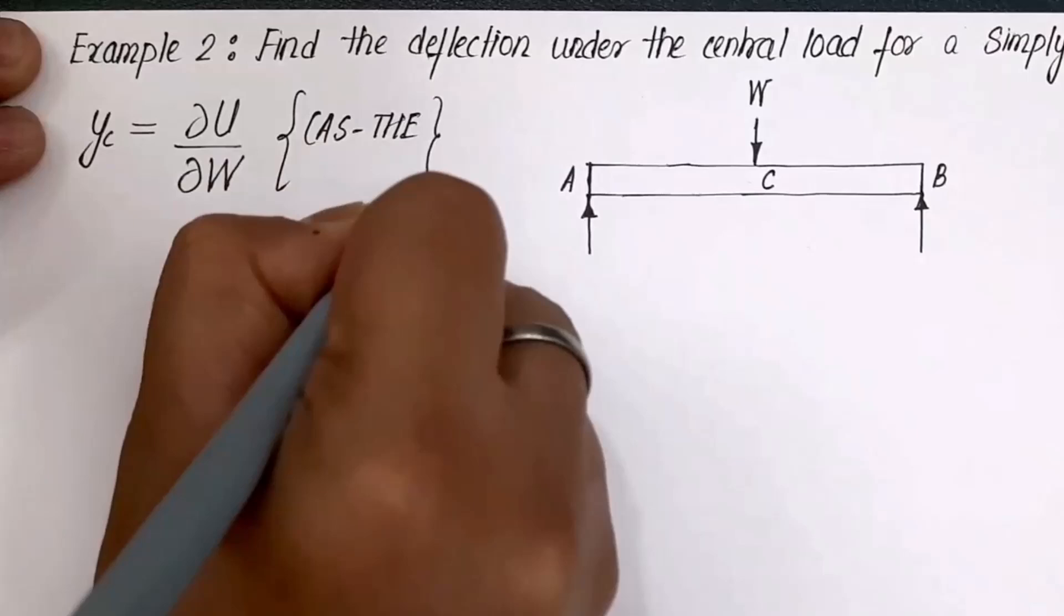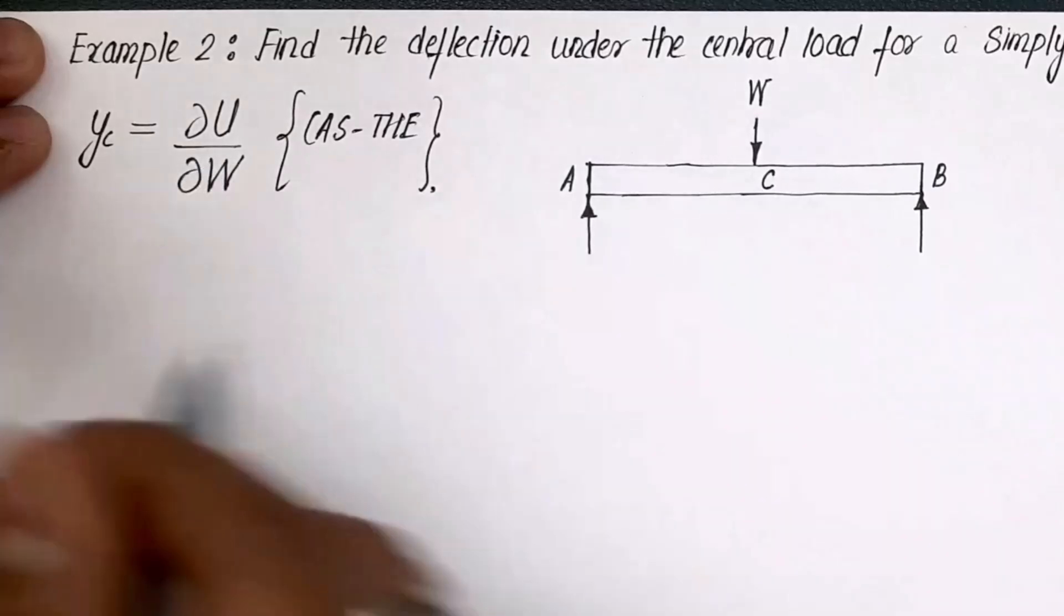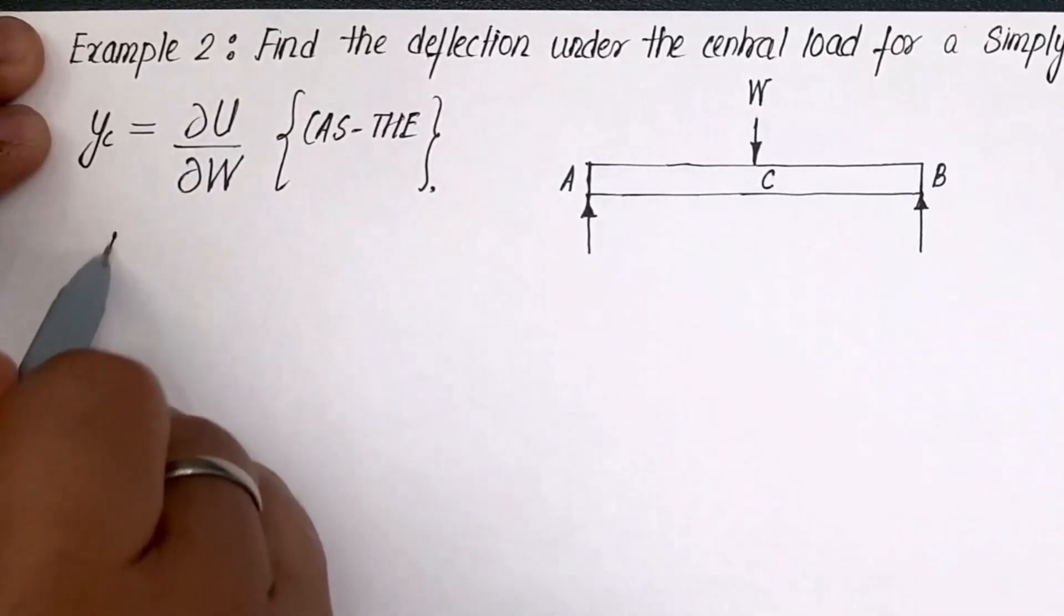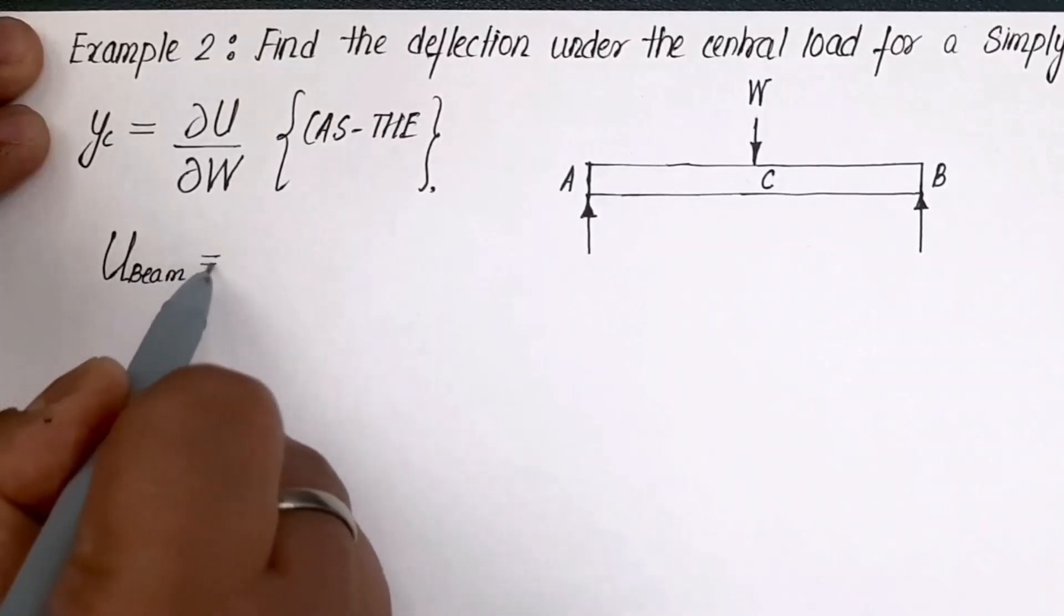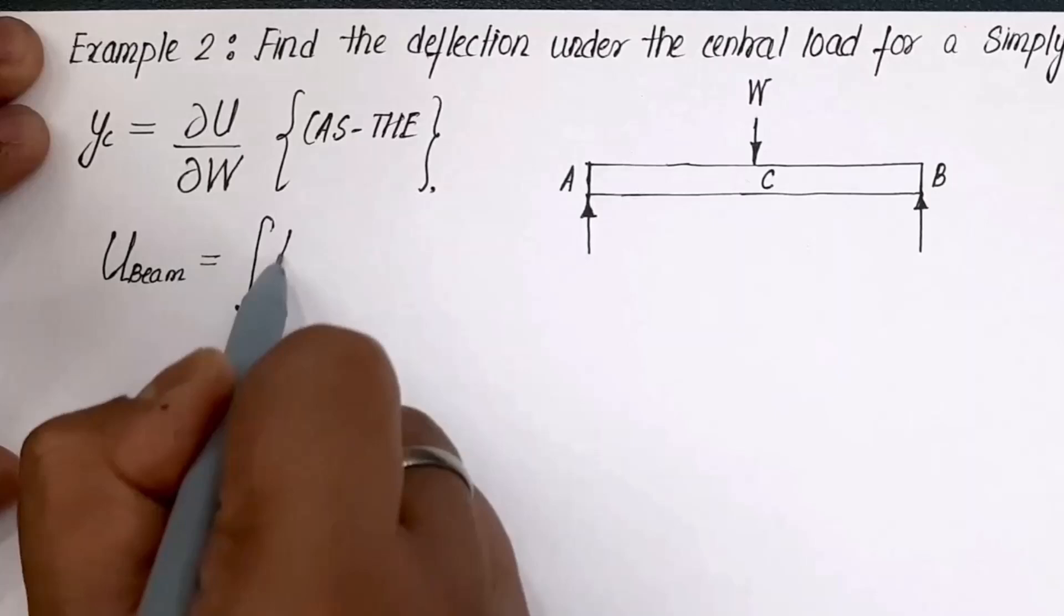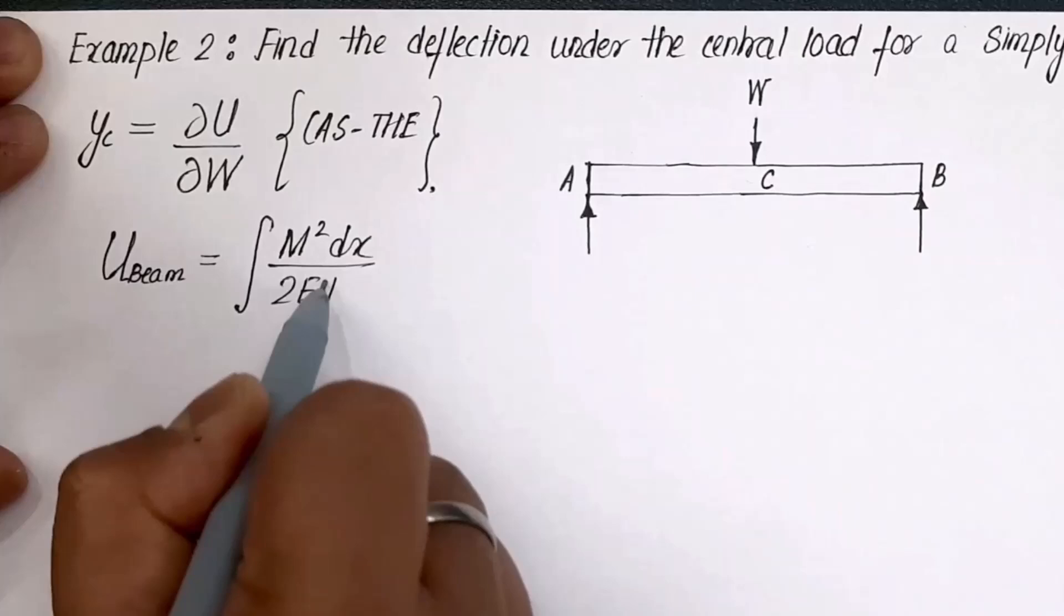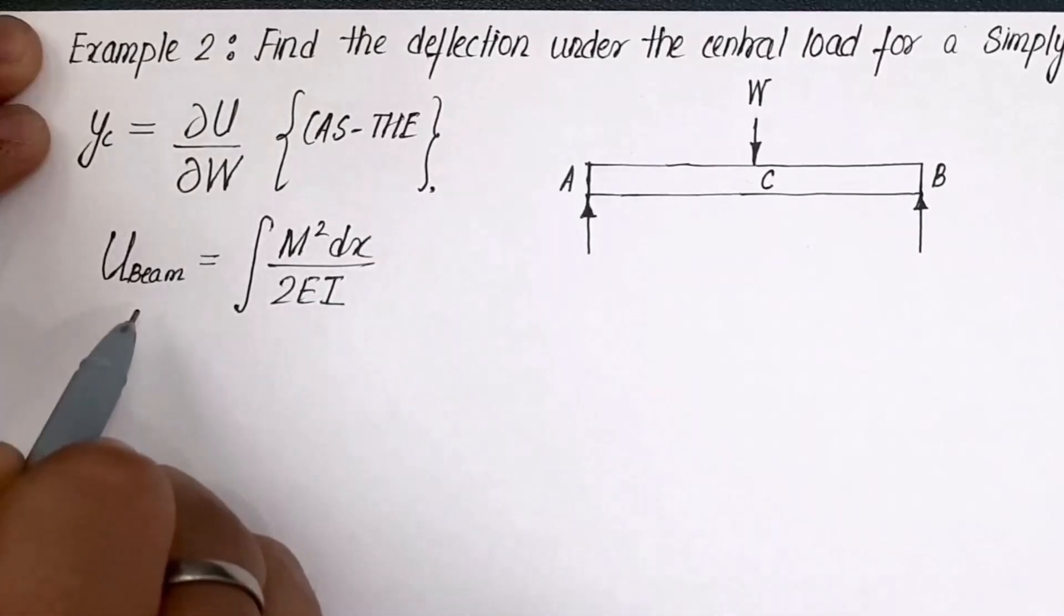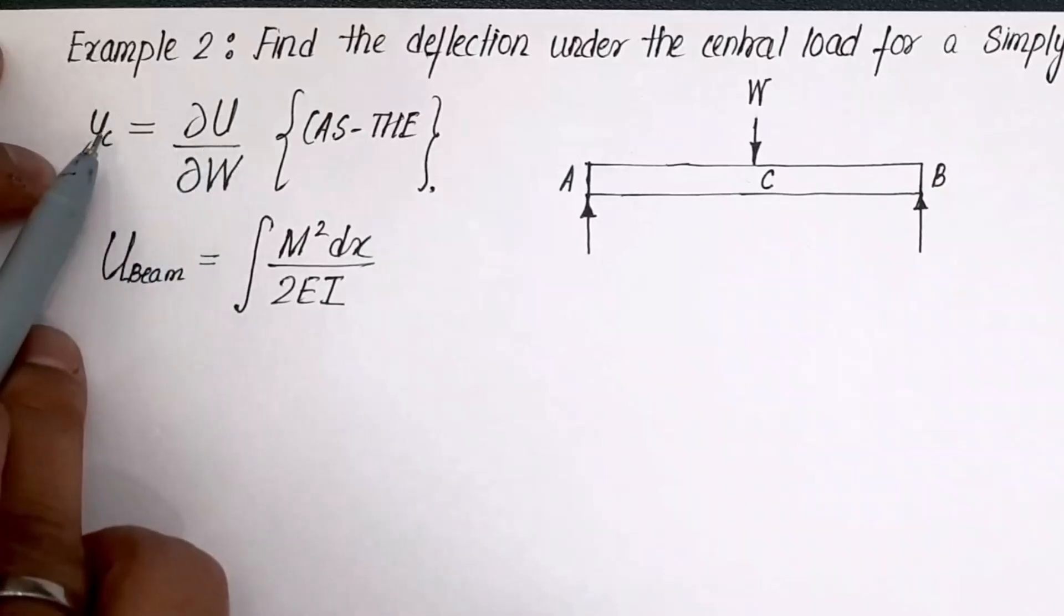That is the first thing. Secondly, this is the strain energy of the beam. This is what you need to calculate. And then there is another formula which I am sure you must remember: U, strain energy for the beam, is equal to integral of M squared dx over 2EI. So I need to make the calculation for strain energy and then I need to plug in that value over here to find the deflection.